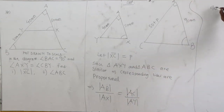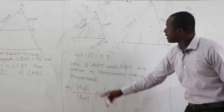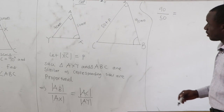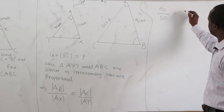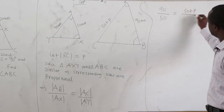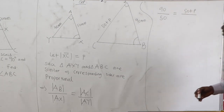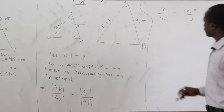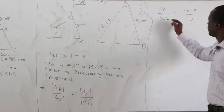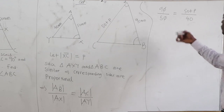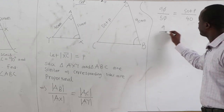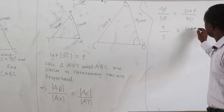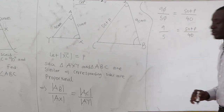AB is 90, AX is 50, AC is 50 plus P, and AY is 40. The 90 and 50 simplify — dividing both by 10 — so we have 9 over 5 equal to 50 plus P all over 40.